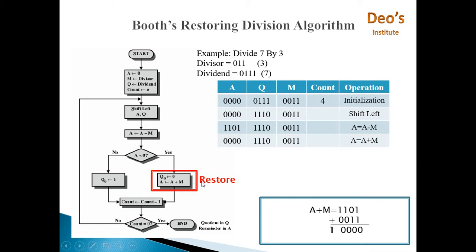This step is called the restore step because we first did A equals A minus M, and as the result is less than 0, we are again doing A equals A plus M. So whatever the value of A was before doing A minus M is restored. We have done A equals A minus M, result was negative, so we restored the value by doing A equals A plus M. This step is called restore — that is why this algorithm is called the restoring division algorithm.